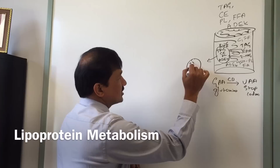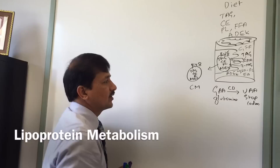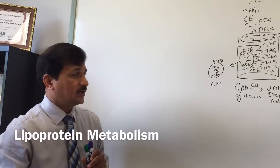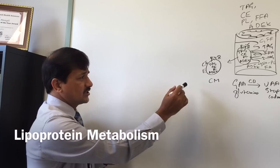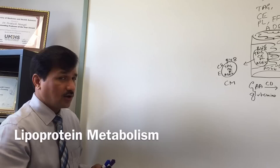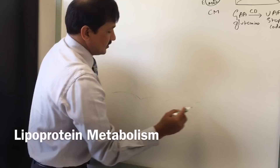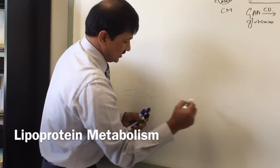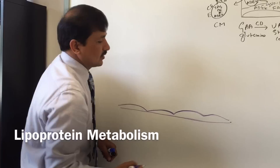Once in the bloodstream, the chylomicron — which contains triacylglycerol, cholesterol ester, phospholipid, and vitamins A, D, E, and K with ApoB48 — acquires ApoC2 and ApoE from HDL, becoming a mature chylomicron. The entire lipoprotein metabolism takes place in the blood vessel. Lipoprotein lipase (LPL) is attached to the endothelium of the blood vessel with the help of heparan sulfate, a glycosaminoglycan.